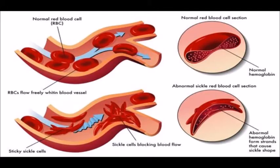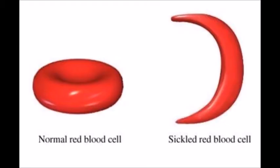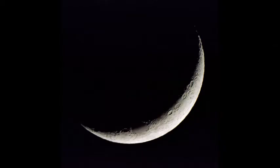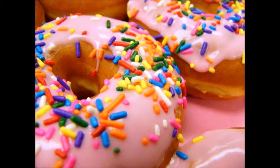Sickle cell anemia is the most common form of sickle cell disease. Sickle cell disease is a disorder in which the body makes sickle-shaped red blood cells. They are called sickle-shaped because the red blood cells are shaped like a sickle or a crescent. Normal red blood cells are disc-shaped and look like doughnuts without holes in their center.